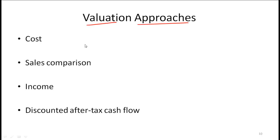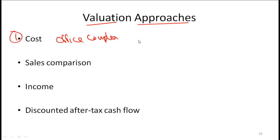Now we are going to talk about the different valuation approaches. There are four basic methods that you need to know. The first method is the cost method, which is very straightforward. Here we simply figure out what is the cost of creating that investment. So for example, if we are talking about an office complex, we look at the cost of the land and the cost of how much it would take to recreate that office complex. And that essentially gives us a valuation based on the cost method.